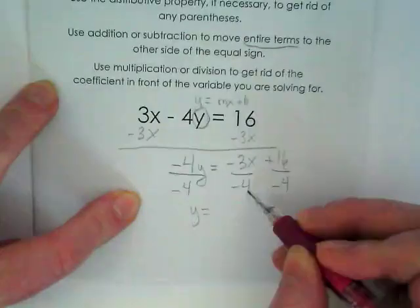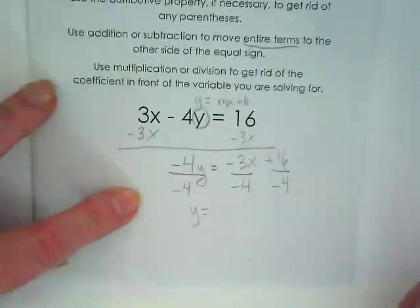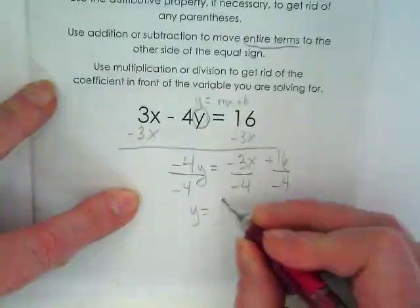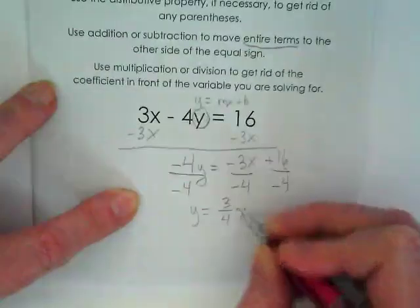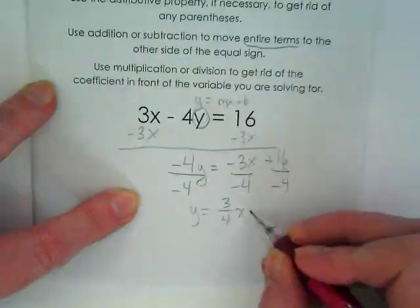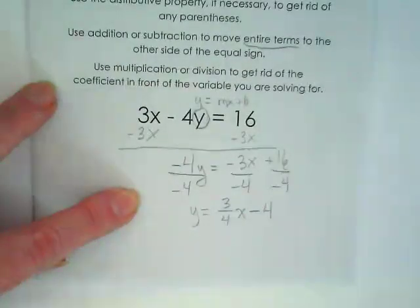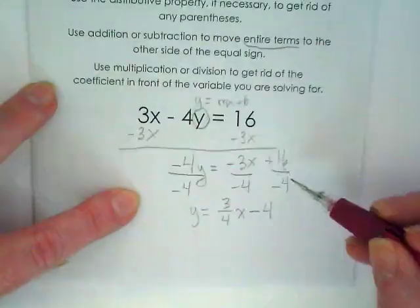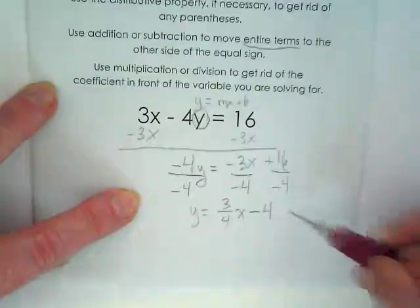And I've got negative 3 divided by negative 4. What happens there? Positive 3 over 4x. That's my rise over run. Minus 4. I have 16 divided by negative 4 gives me a negative 4.